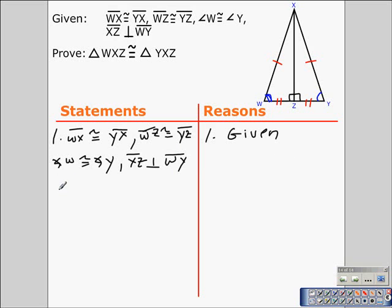What we want to do next is establish that XZ is congruent to itself. And from the last proof I did in part two of section 4.1, we should know that segment XZ is congruent to itself because of the reflexive property of congruence.